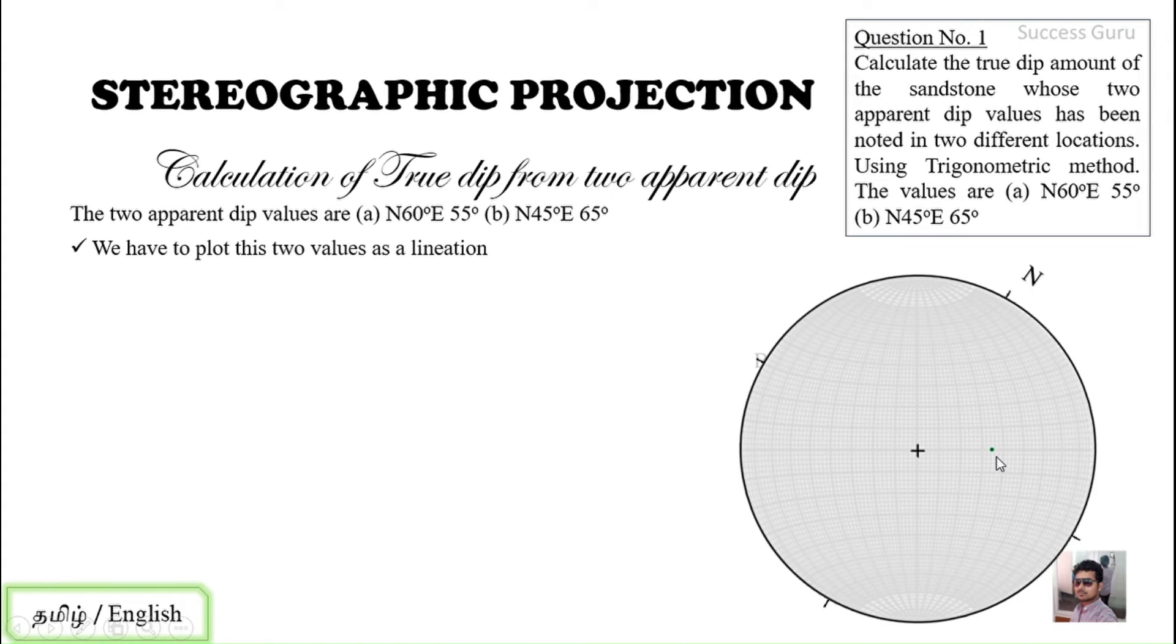And the next thing is that we have to plot the other one, that is N45° E and 65°. So this will be N45 degrees, and the dip amount is 65, so this will be somewhere here like 10, 20, 30, 40, 50, 60 and 65.